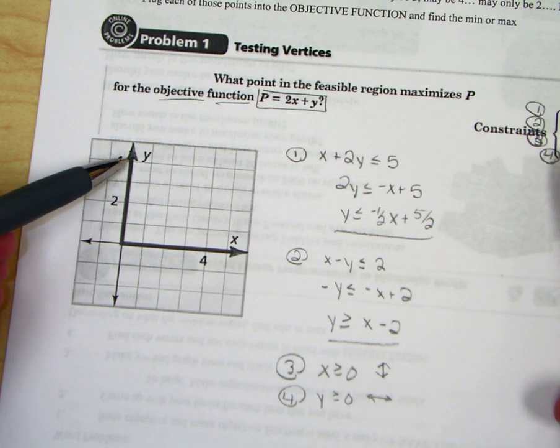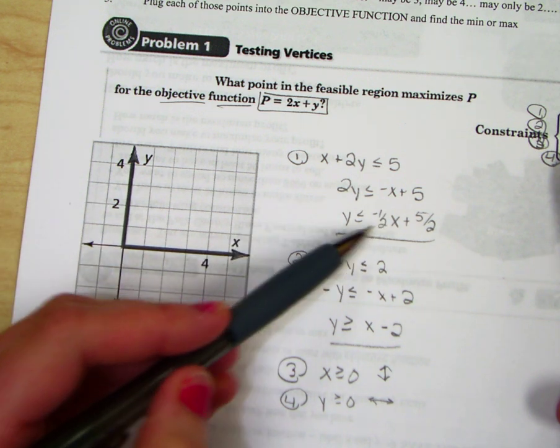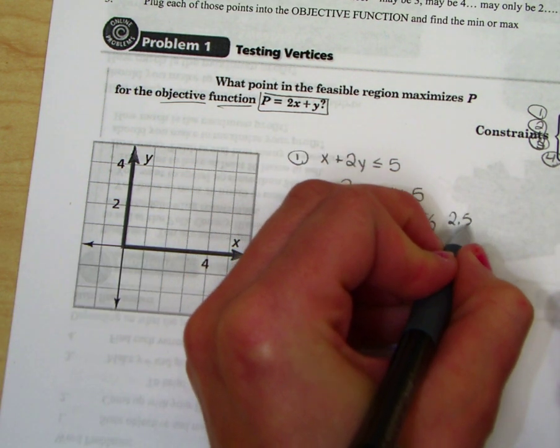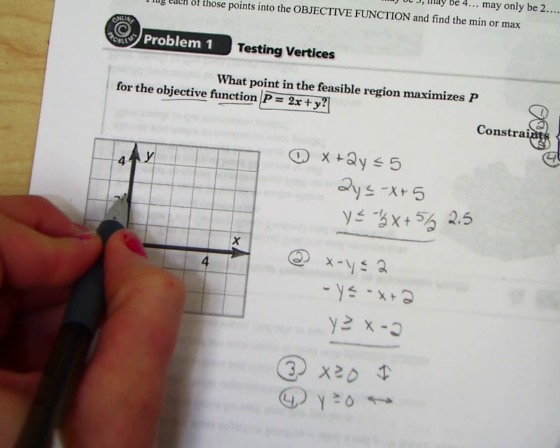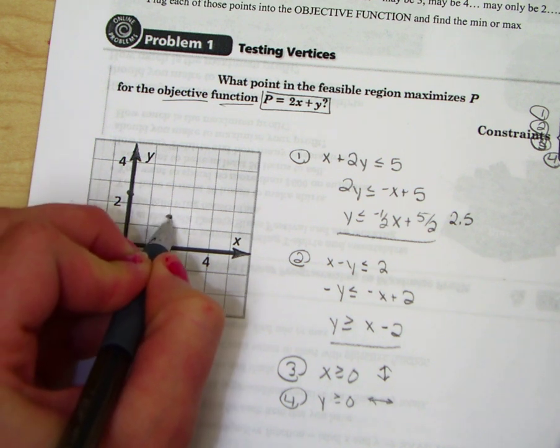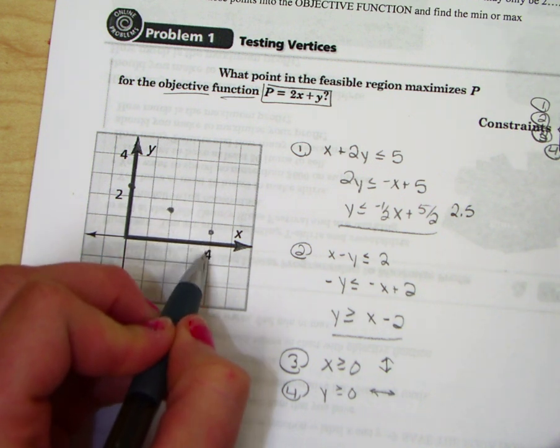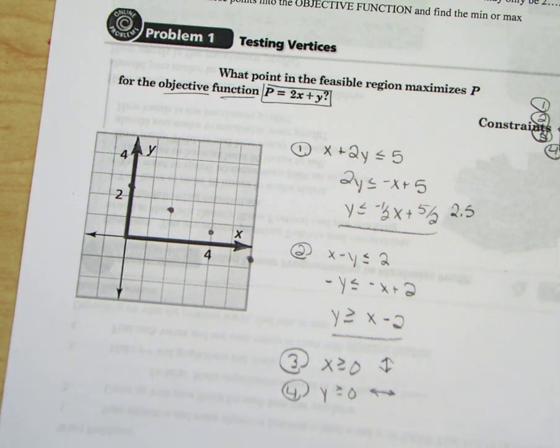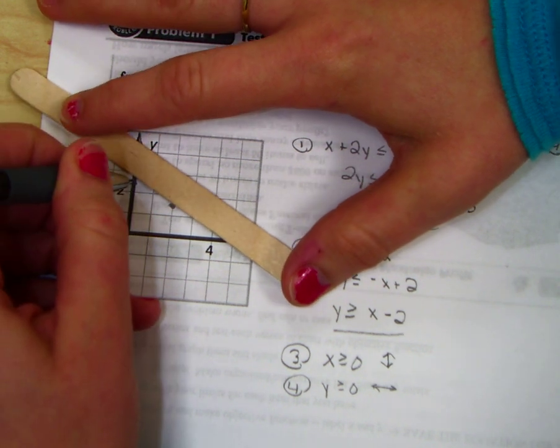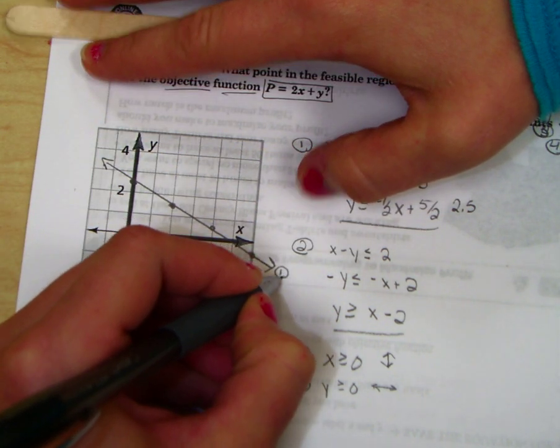We've already graphed the straight up and down line and the straight left and right line. Now let's graph the others. y is less than or equal to negative 1 half x plus 5 over 2. Just so you know, 5 over 2 is the same thing as 2.5. So I'm going to go up 2 and a half and make my y intercept. I'm going to go down 1 over 2. Look how I'm in the middle of my boxes since my y intercept was by a half. Down 1 over 2. Down 1 over 2. Get a straight edge and connect.